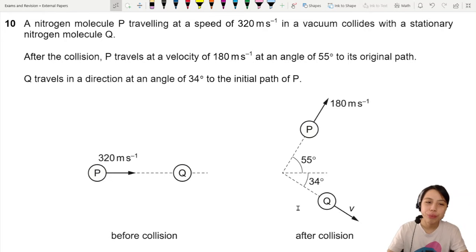Here's a two-dimension collision with molecules. You have a nitrogen molecule P traveling at a super fast speed. P collides with another stationary molecule. I'm gonna start off by writing some notes. This is our initial speed of number one. Initial speed of number two, zero.